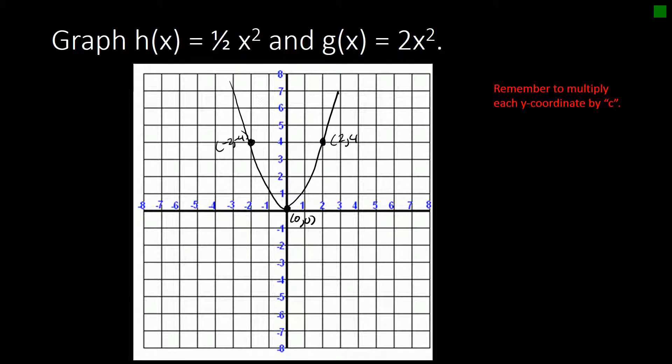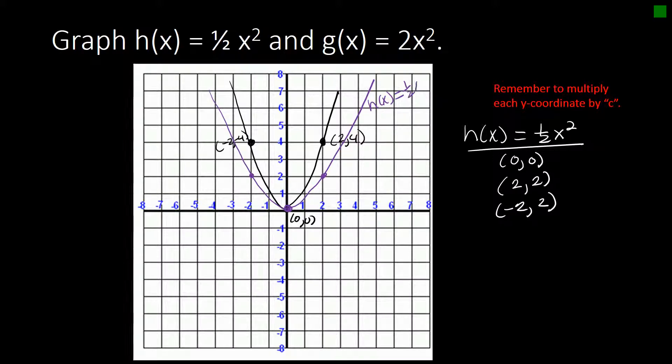So let's look at h of x. So if we look at the point 0, 0 here, multiplying the y-coordinate by 1 half still gives us 0, 0. If we look at our point 2, 4, multiplying here by the y-coordinate, 1 half by the y-coordinate gives us 2 comma 2 and negative 2 comma 2. So let's graph this in purple. So we have 2 comma 2, negative 2 comma 2. And that's the graph of h of x equals 1 half x squared.